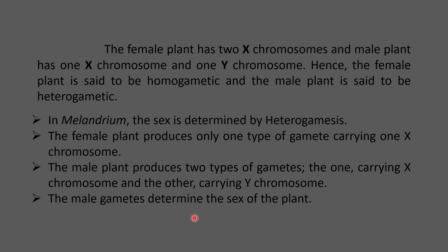The female plant has two X chromosomes and is called homogametic, while the male plant has one X and one Y chromosome and is called heterogametic. In Melandrium, as in XX-XY type sex determination in higher plants, the theory of heterogamesis is followed — whichever parent carries heterogametes (two different gametes) determines the sex of the progeny.